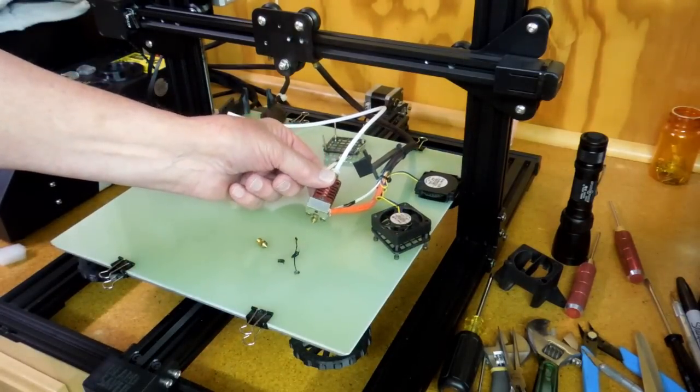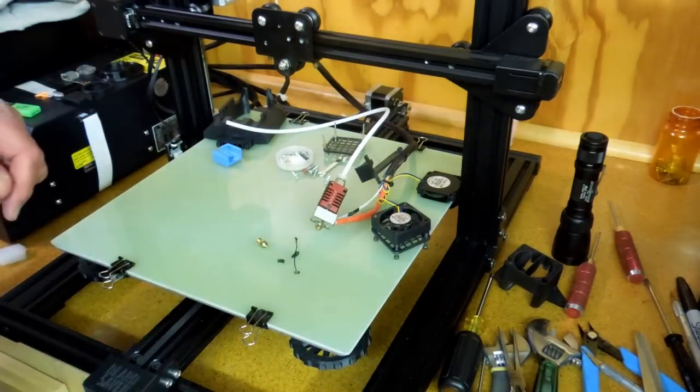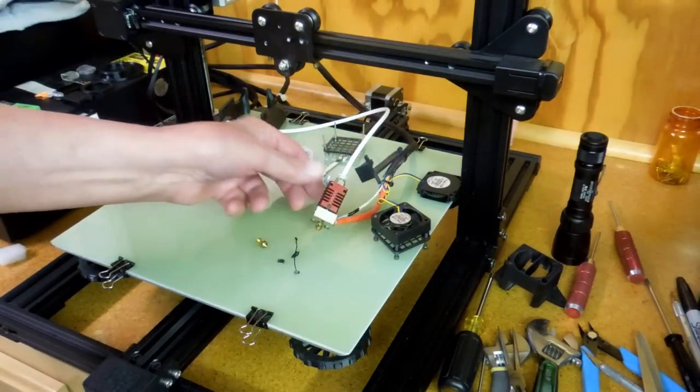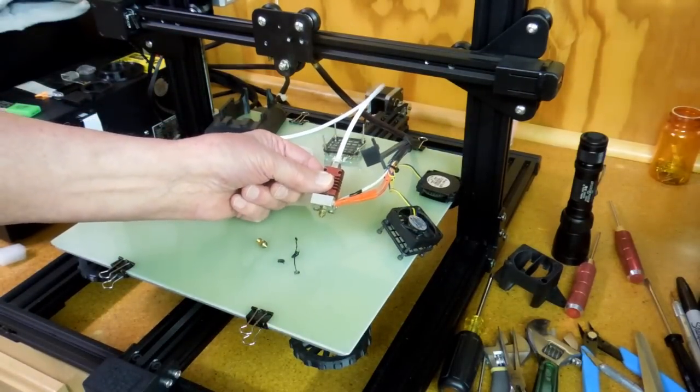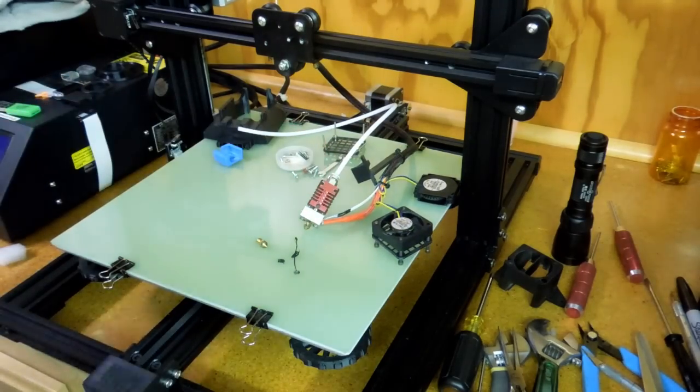I believe this is the third time filament has decided it doesn't want to come out of this nozzle and the extruder starts clicking. From past experience I've found it's easiest to remove this so you can see everything that's going on here and makes it easier to determine what the problem is.